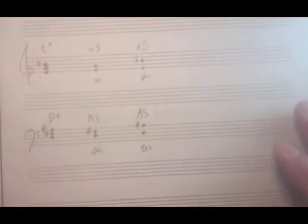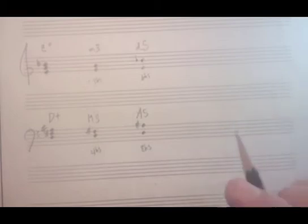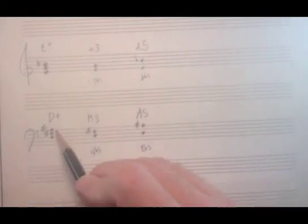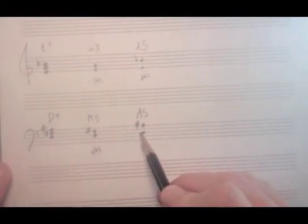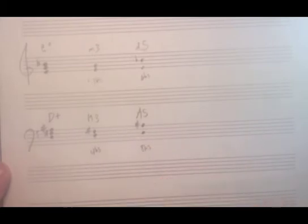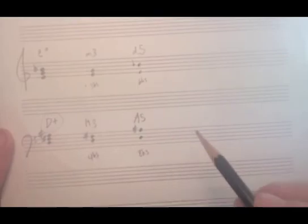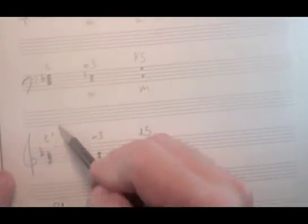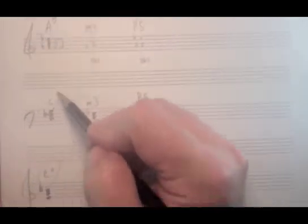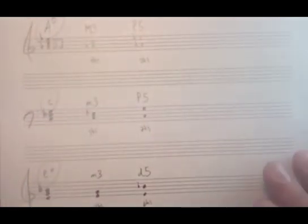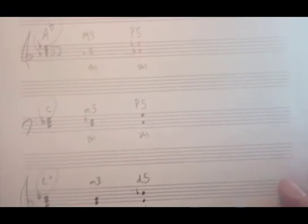That is how we take a written triad, break it down into two intervals, and use the triad sheet to figure out the chord symbol for each one. In the next video we're going to do another version of this.